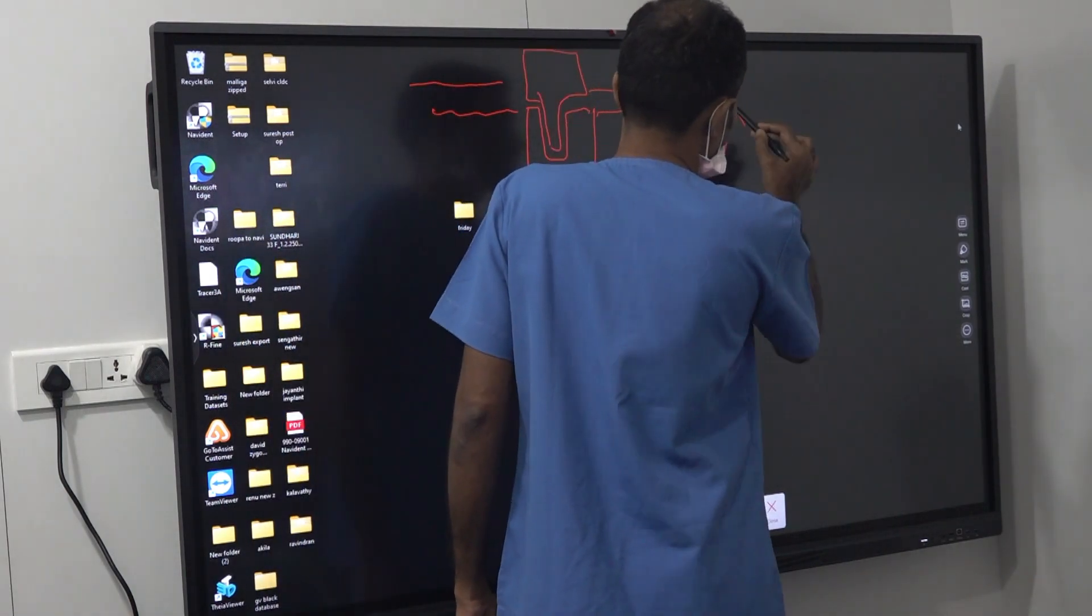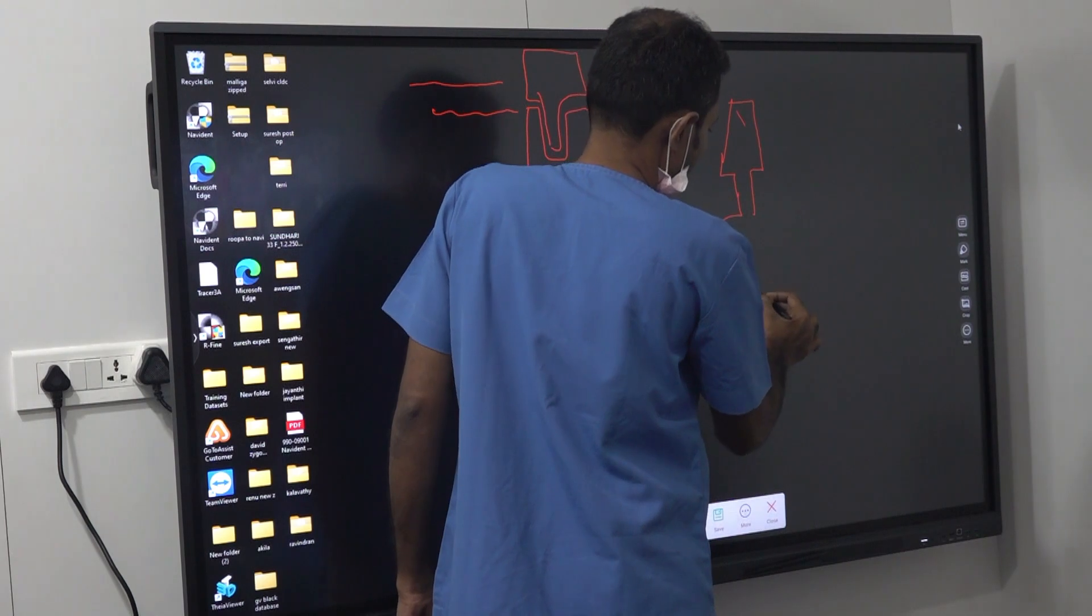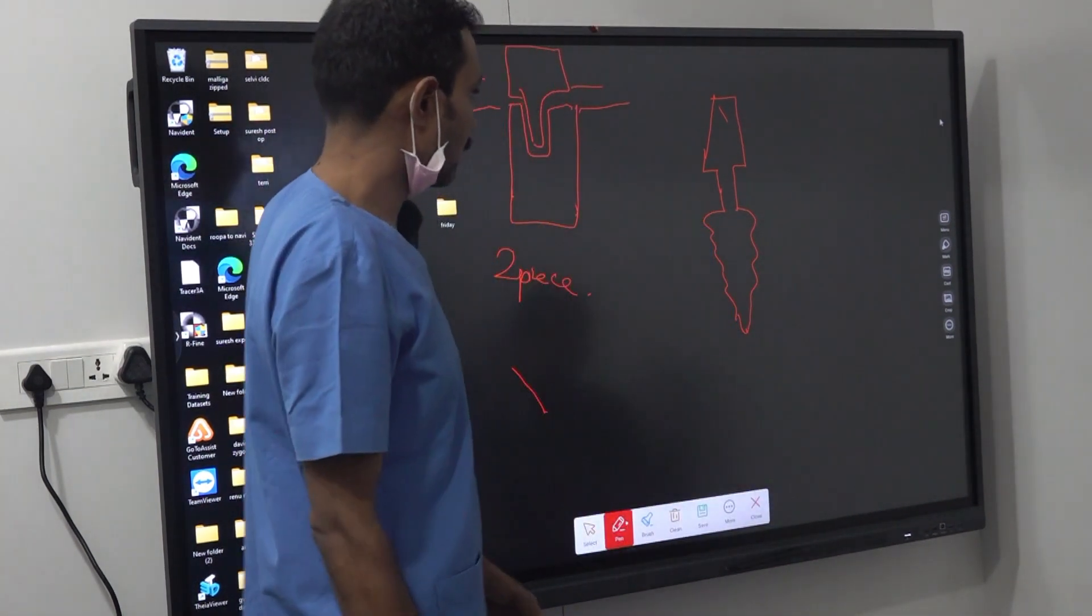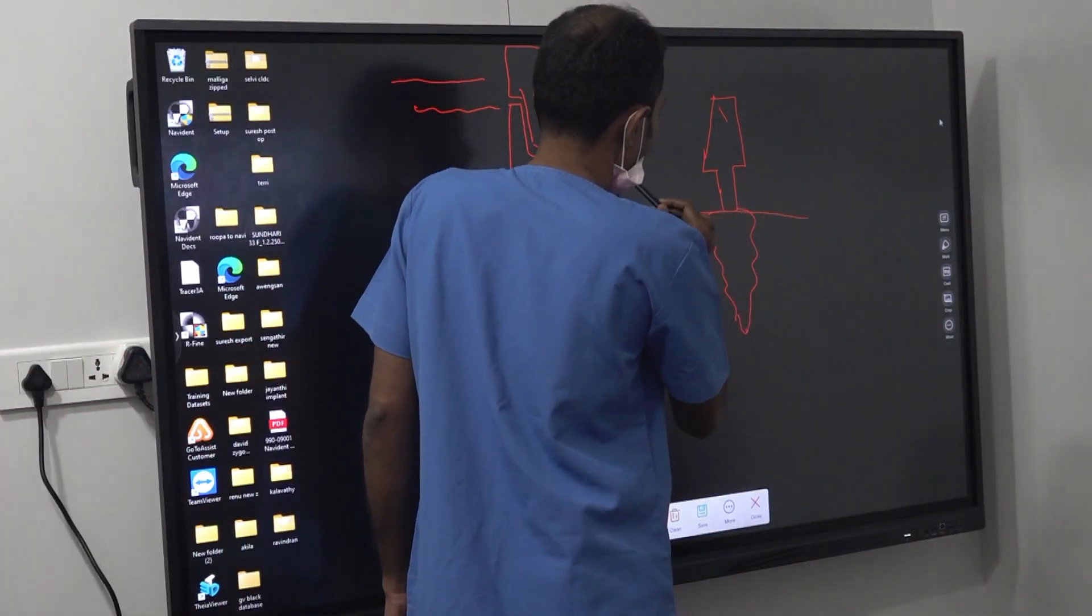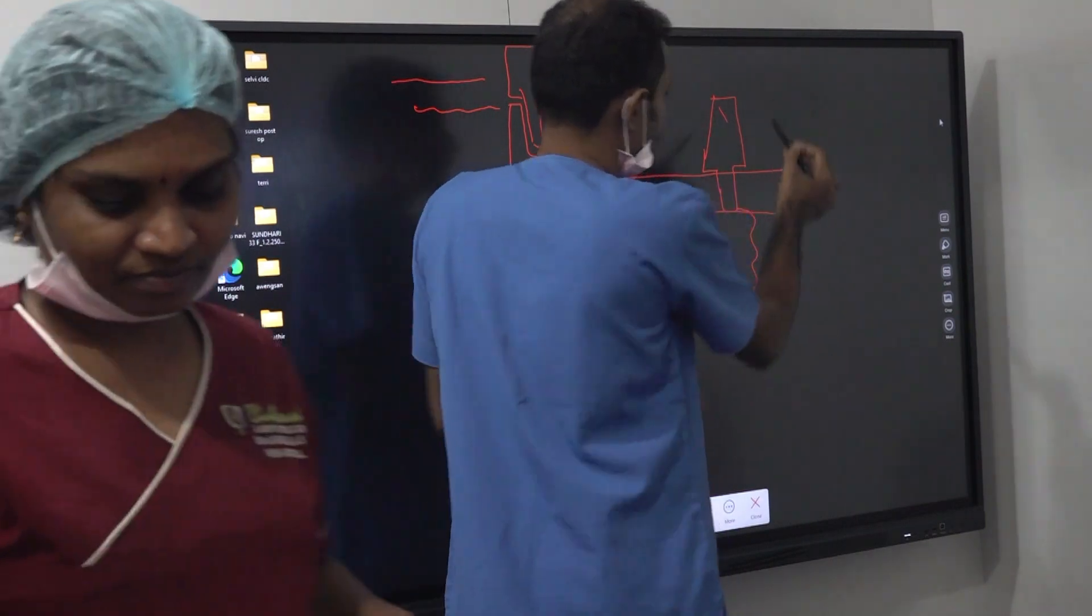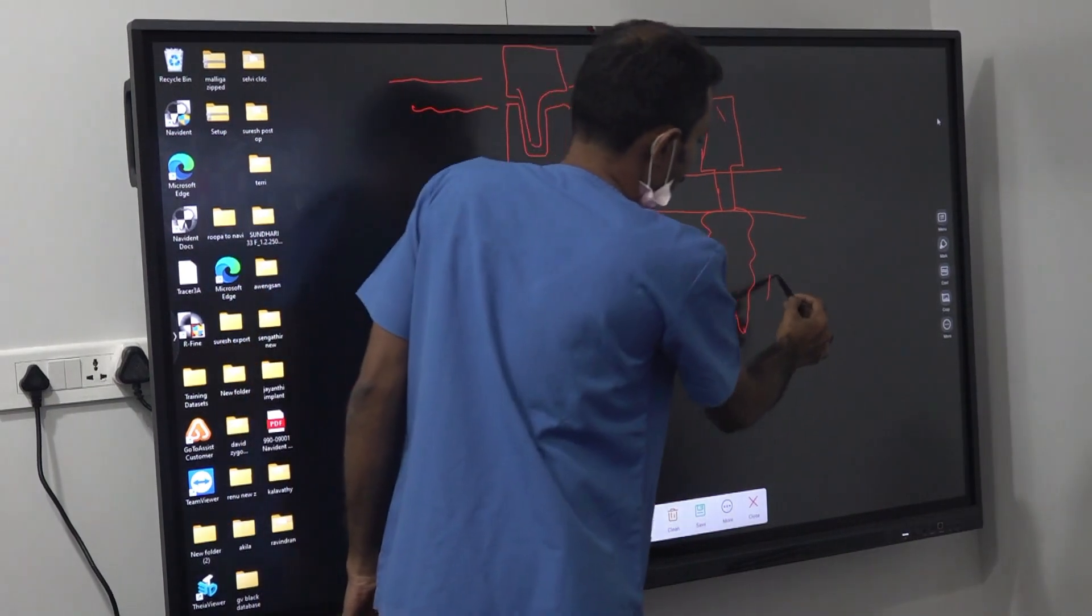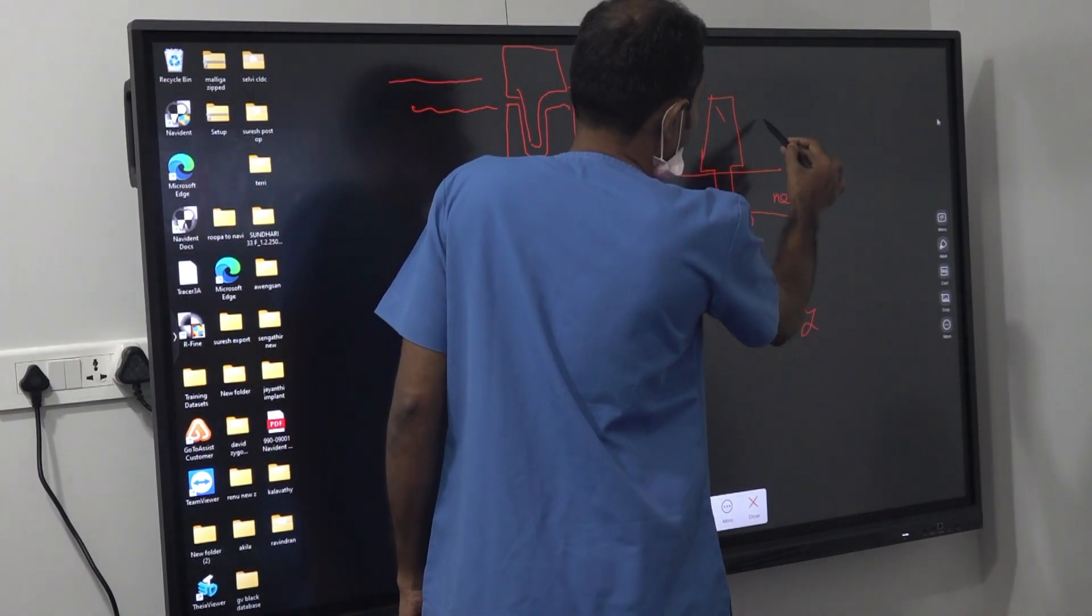Basal is quite different. The bone will come here, the gum will come here. This part will be sticking outside. So this is the body, this is the neck.